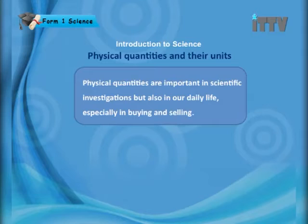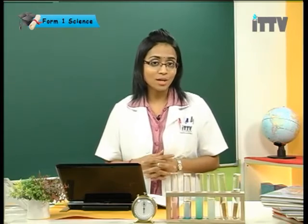So let's recall: the physical quantities are electric current, length, mass, and so on. Physical quantities are important in scientific investigation but also in our daily life, especially in buying and selling. For example, you'd go to a shop and ask for a meter of cloth, or one kilogram of rice or fish. This is how physical quantities are useful in daily life.